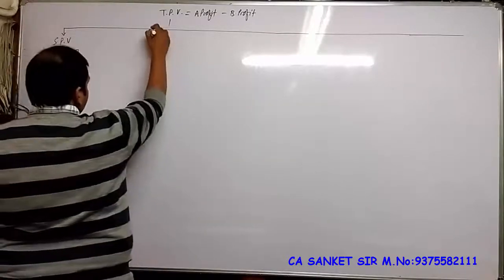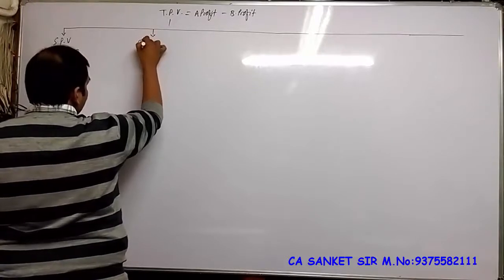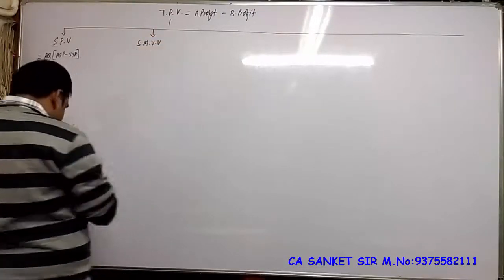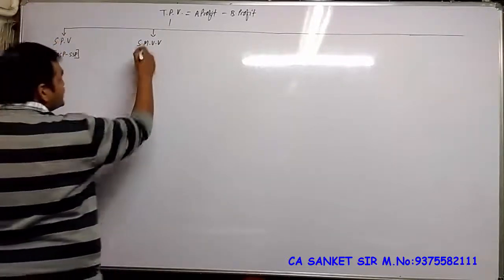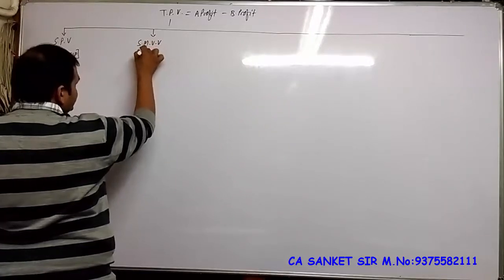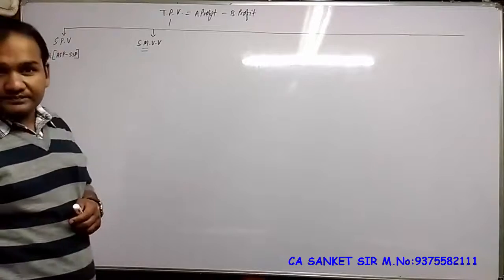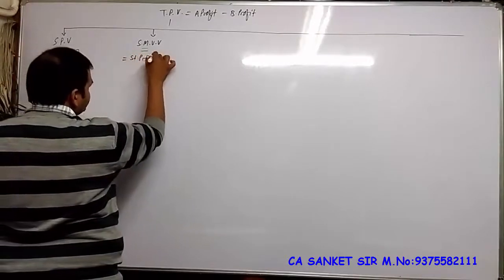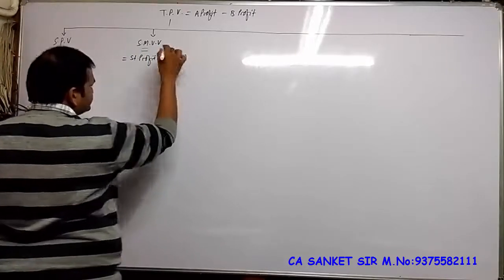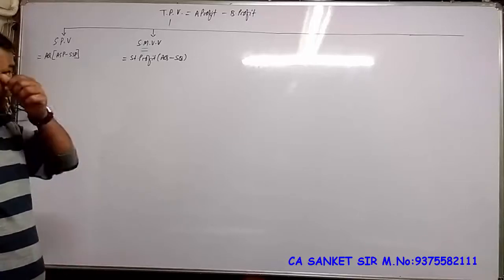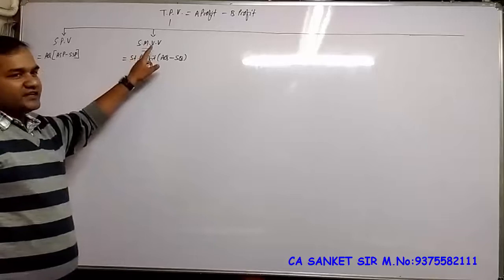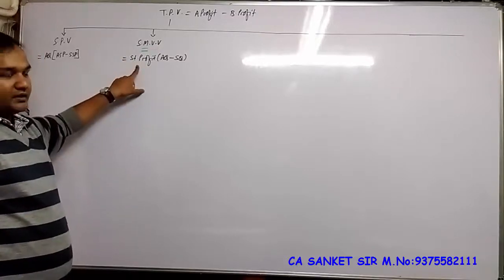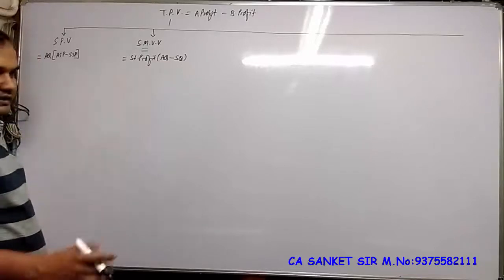The second reason is Volume. Here a variance called Sales Margin Volume Variance comes in. The quantity you sell — what matters is the Margin in it, and Margin means Profit. So the formula becomes: Standard Profit × (Actual Quantity minus Standard Quantity). If you sell more quantity, multiplying by Standard Profit tells you the variance you deserve.